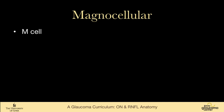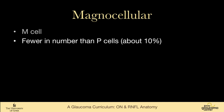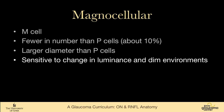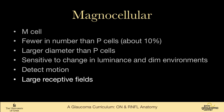The M cells, magnocellular, are large and fewer in number. They represent about 10% of the ganglion cells. They're larger diameter, sensitive to change, luminance, and dim environments, and they detect motion. They have large receptive fields, so they're not much good for fine detail, and have slower conduction velocities than the P cells.